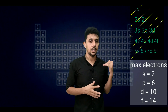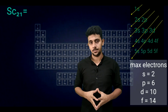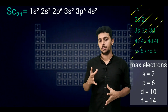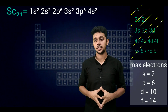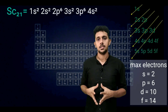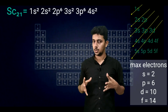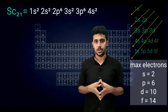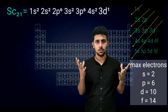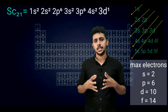A very important example — look at scandium, atomic number 21, with 21 electrons. The configuration is 1s2, 2s2, 2p6, 3s2, 3p6, then 4s2, with the remaining 1 electron going into 3d1.